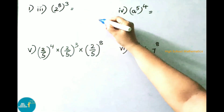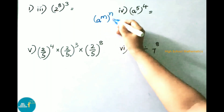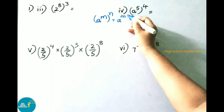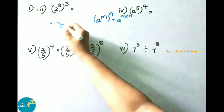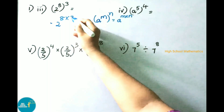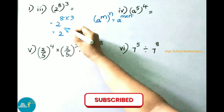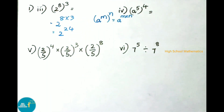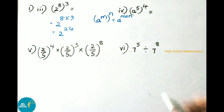Third sum: 2 power 8 whole power 3. It is looking like the formula a power m whole power n that equals to a power m into n. So write down 2 power 8 into 3, that equals to 2 power 24. The answer is 2 power 24.